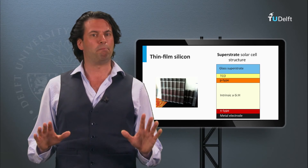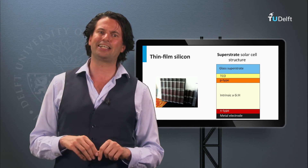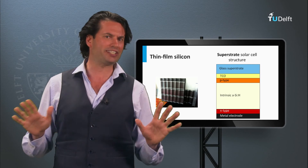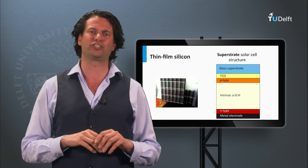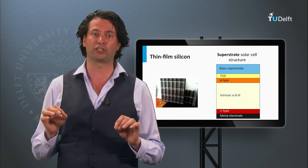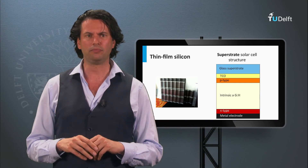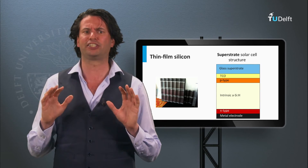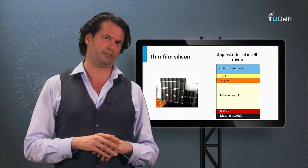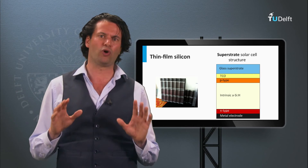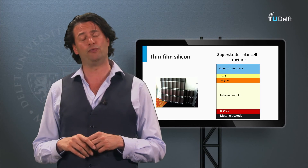Another PV technology based on silicon is thin film silicon. In this case, no crystalline silicon wafers are used, but very thin layers of silicon which are deposited on glass or a flexible substrate. The silicon does not have the same lattice structure and can be amorphous or nano-crystalline. This technique belongs to second generation PV technology and will be discussed in week 5.